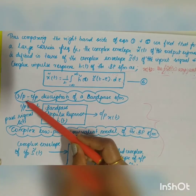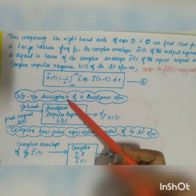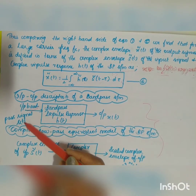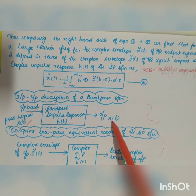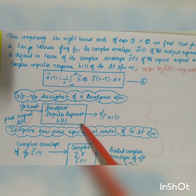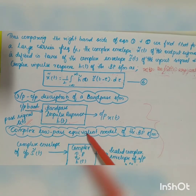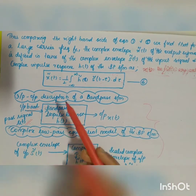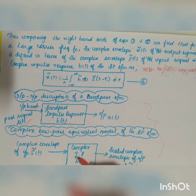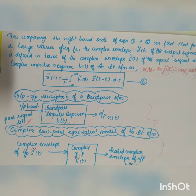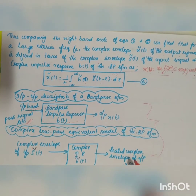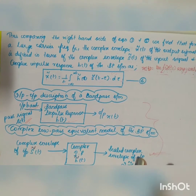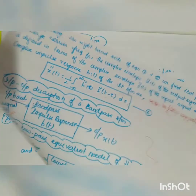Two diagrams represent this. The first shows the bandpass system directly: input s(t), impulse response h(t), output x(t). The second is the complex low-pass equivalent model, where s(t) is replaced by s̃(t), h(t) by h̃(t), and the output is the scaled complex envelope 2·x̃(t).